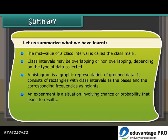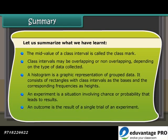An experiment is a situation involving chance or probability that leads to results. An outcome is the result of a single trial of an experiment.